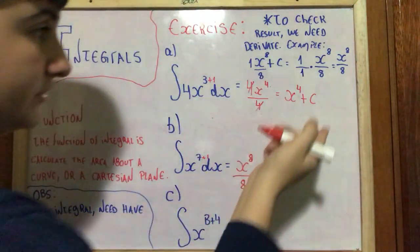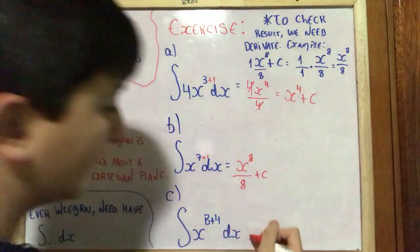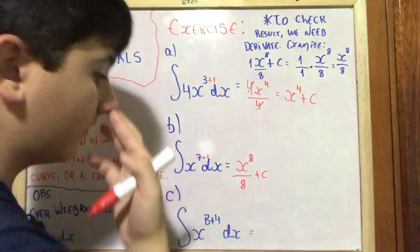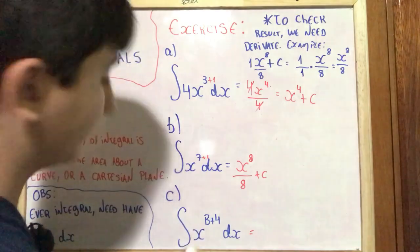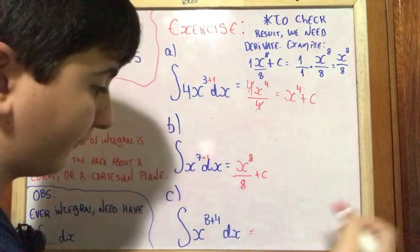And to check, we need to derive. And then last, we have integral of X^(B+4) dx.